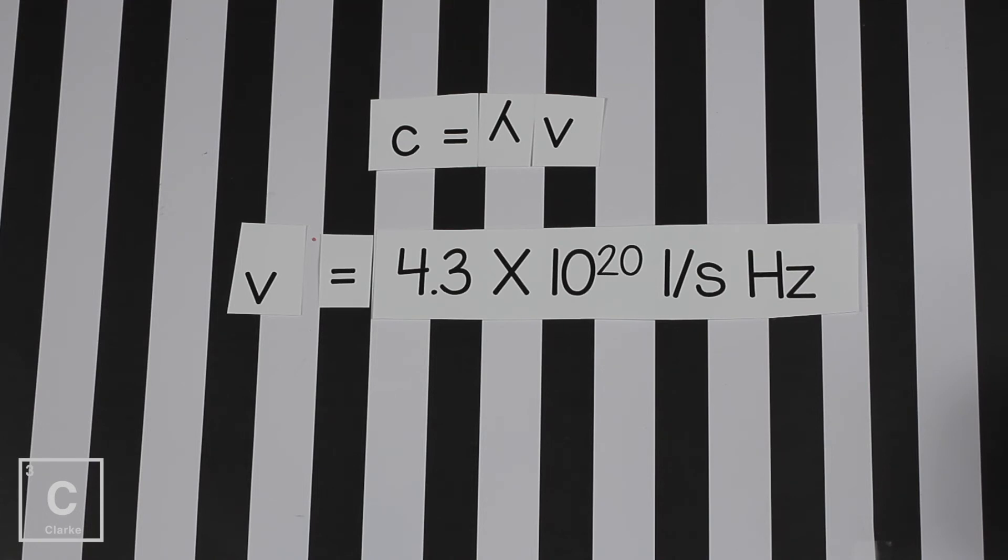Now let's look at those units for frequency. We can either have per second, that's 1 divided by second, or hertz. Because remember frequency is how many waves pass by per second.